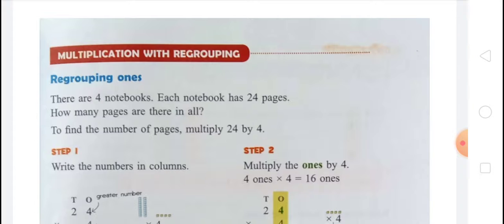After that we learned numbers up to 999. In this topic we learned forming numbers up to 999, place value, expanded form of numbers, and comparing numbers.